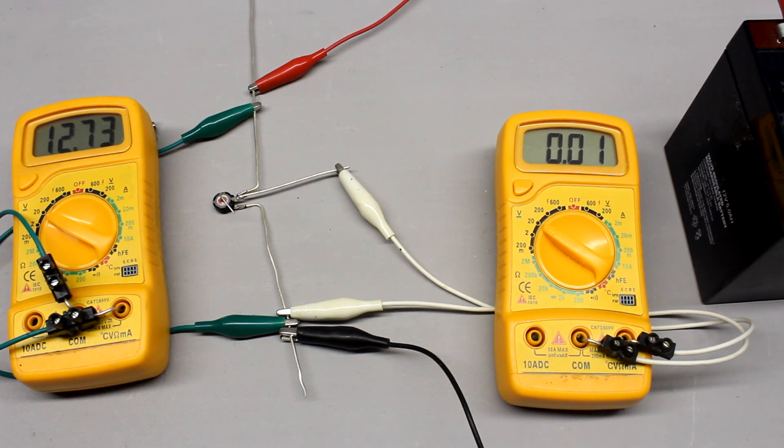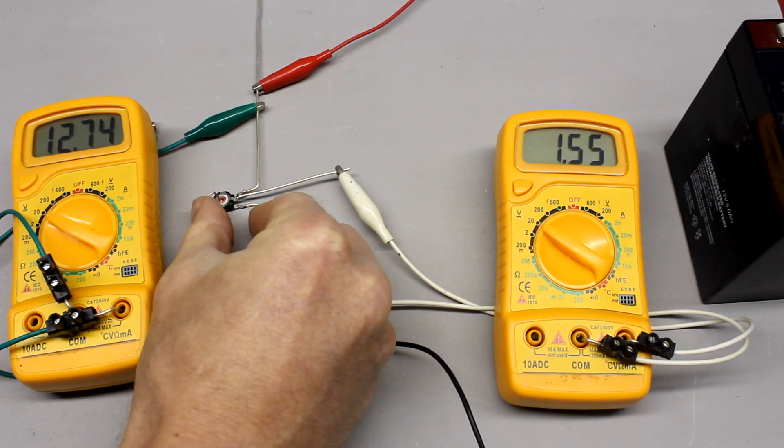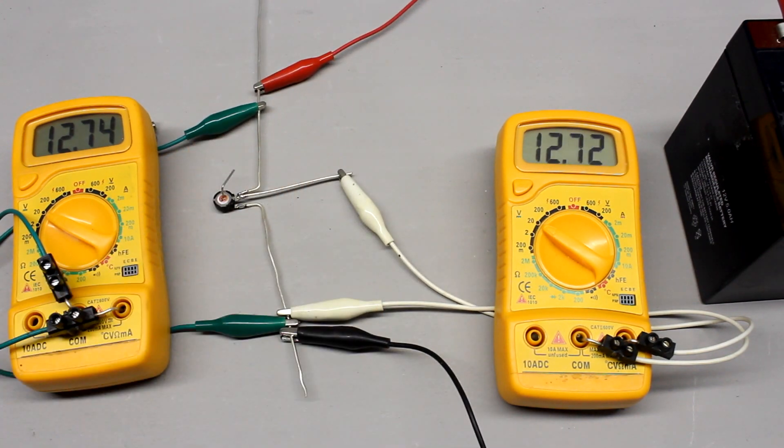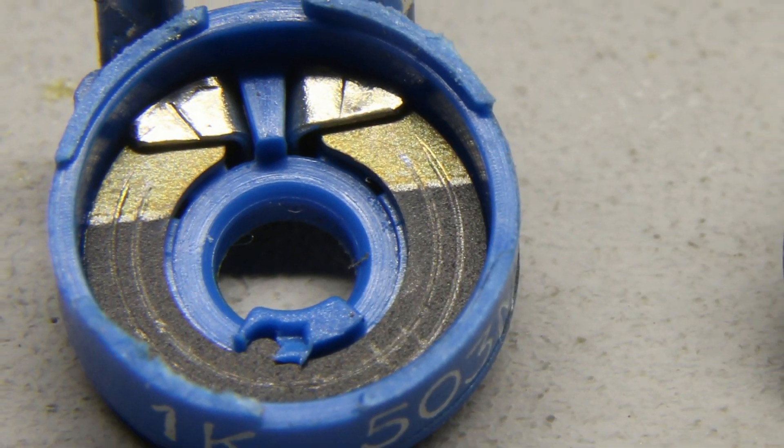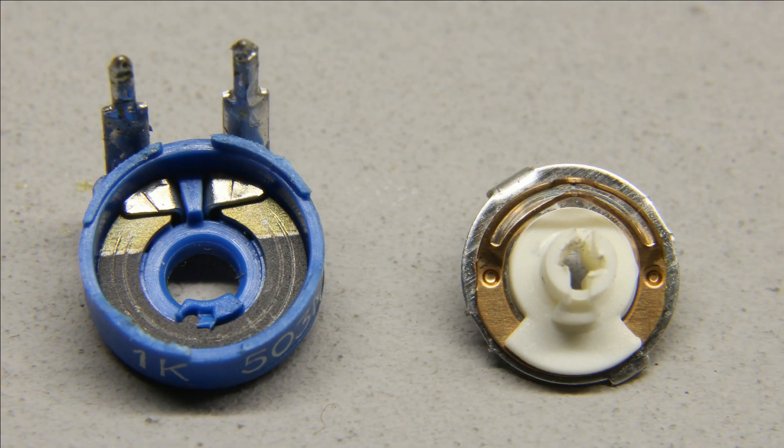In principle, a potentiometer is an adjustable voltage divider. The voltage output at the sliding contact is between 0V and the input voltage of the divider. Usually they are constructed with a resistive element formed into an arc of a circle, a little less than a full turn.